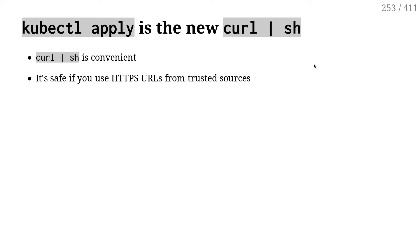Both kubectl apply and curl-pipe-sh are super convenient, because instead of telling somebody to run 15 steps, you just tell them to execute that script. Same thing with kubectl apply — instead of telling people to create a deployment, then a service account, then a role binding, and so on, you just tell them to apply that YAML and it takes care of everything.